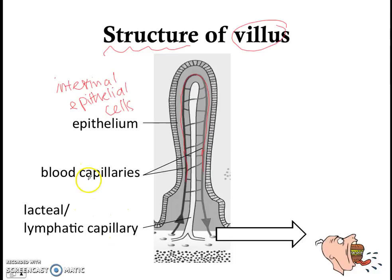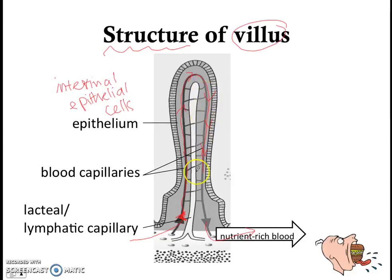These two capillaries play different functions. This arrow shows the nutrient-rich blood leaving the villus. Blood goes in through these capillaries here, moves through the villus, absorbs nutrients, and then the nutrient-rich blood leaves the villus. So that's the flow of blood through the villus.